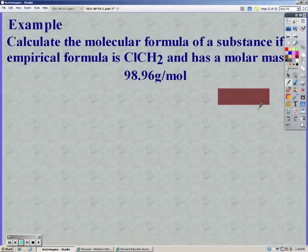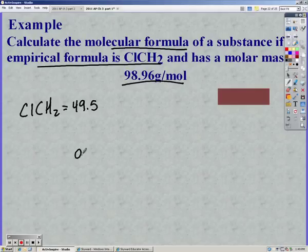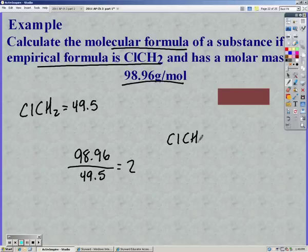So in this one they want you to calculate the molecular formula. They gave you the empirical formula and the molecular's molar mass. So first you have to find the empirical formula's molar mass. Chlorine is 35.5, carbon 12, hydrogen 1, which gives us 49.5. The molecular over the empirical mass should give you a whole number or something very close to a whole number. In this case it's a 2. So we multiply our empirical by 2. So Cl2C2H4.